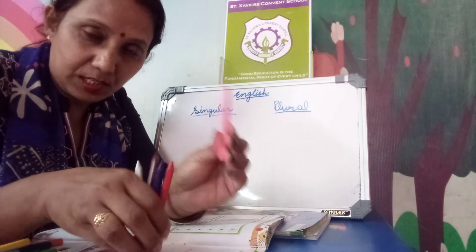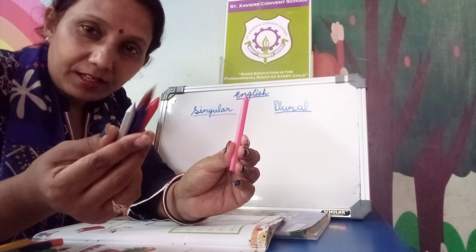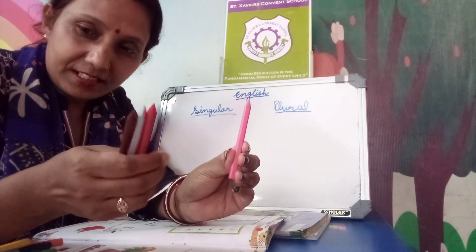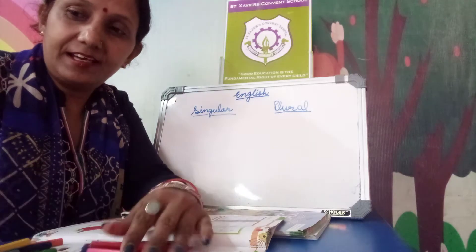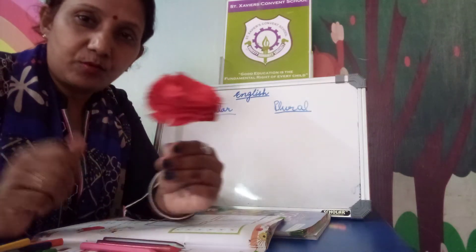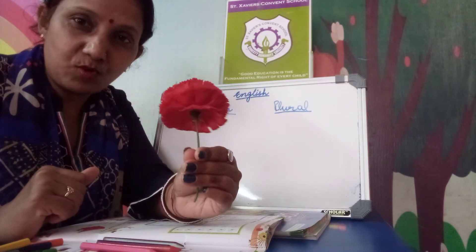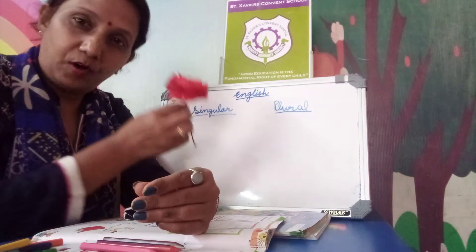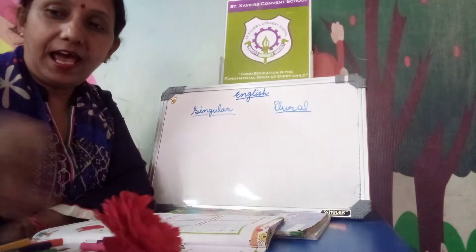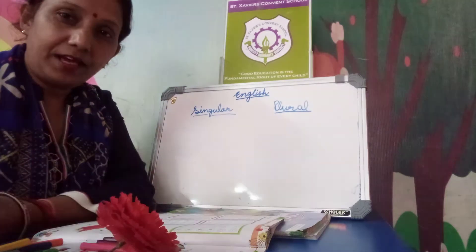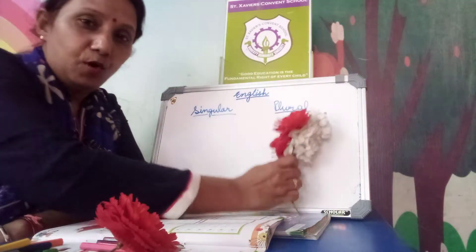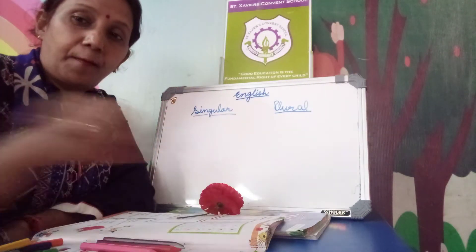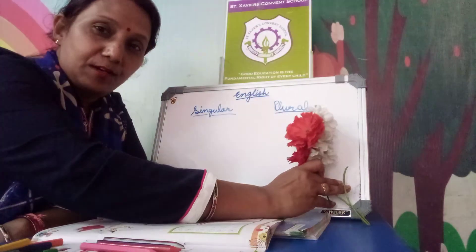One thing is singular and many things — many what? Plural. Suppose, just see here — this is what? One flower. So that one is singular. One flower is singular and many, many flowers — plural.